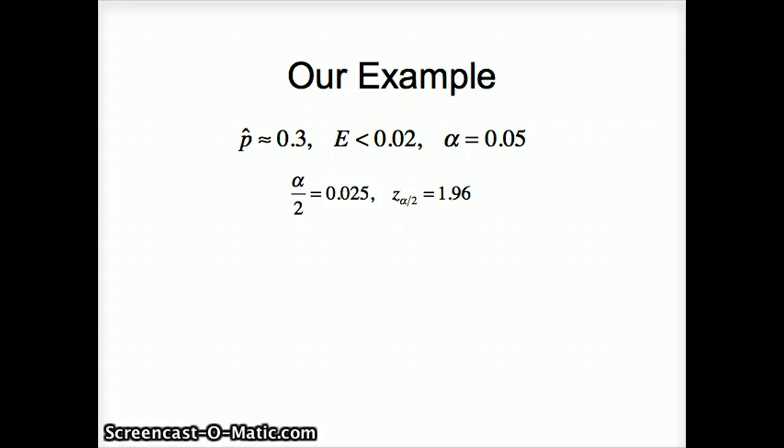Continuing, here's our formula for the margin of error: E is z alpha by 2 square root of P hat Q hat over n. E will be 0.02, Z alpha by 2 will be 1.96, P hat we're getting from our previous study at about 0.3, Q hat then will be 0.7, 1 minus P hat. And n is what we're looking for.